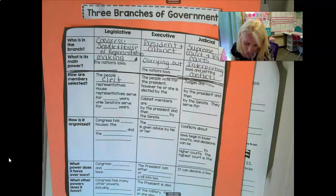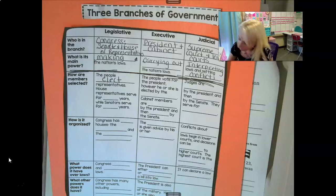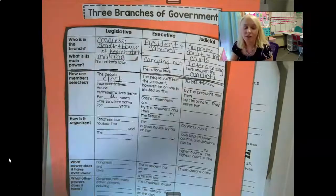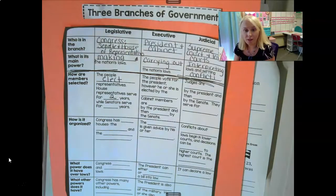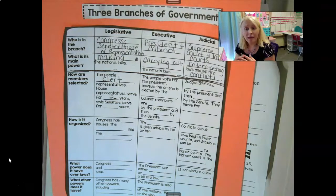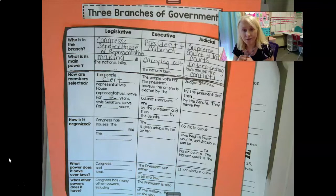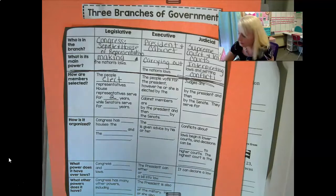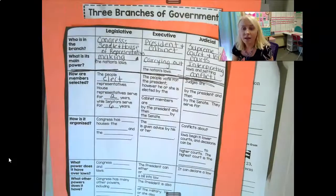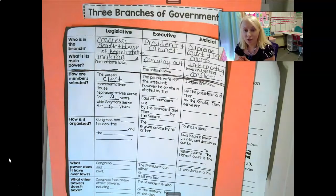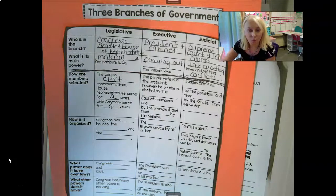House representatives serve for two years, and then they're up for election again. An election is great because if you don't like the job that a particular individual is doing, you can vote for someone else. Senators, however, serve a little bit longer — they serve for six years. After those six years, they're up for election again. Doing a good job, you vote for them again. You disagree, you vote for someone else.